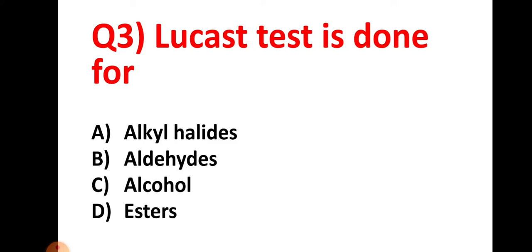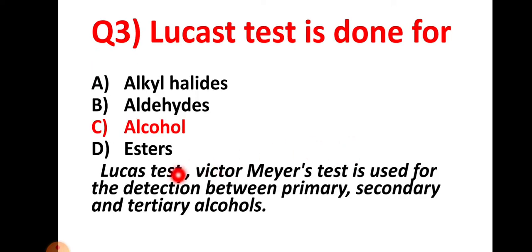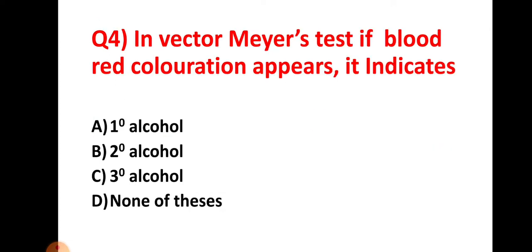Question number three: Lucas test is done for — the right answer is option choice C: alcohol. Lucas test and Victor Mere's test are tests used to distinguish between primary, secondary, and tertiary alcohols.